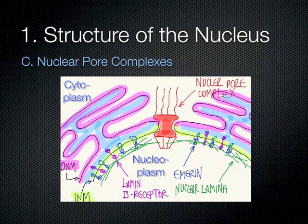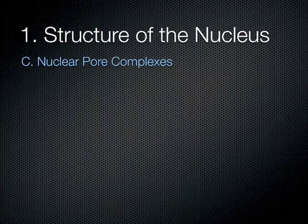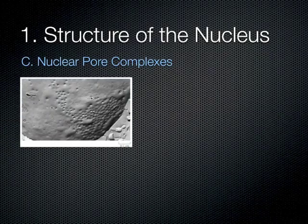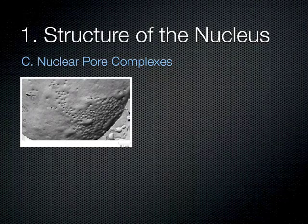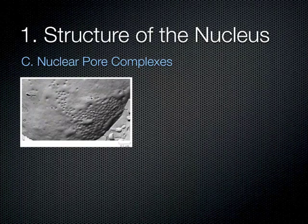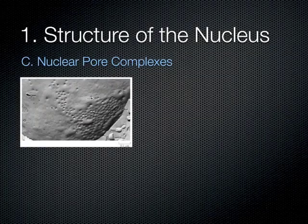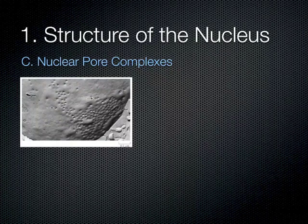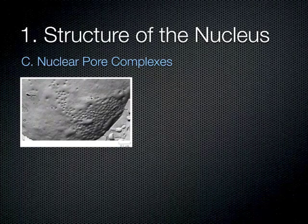The next component is the nuclear pore complex, which is basically the gate communicating the cytoplasm with the nucleoplasm. Any molecule going from the nucleoplasm to the cytoplasm must go through that gate. This is how nuclear pore complexes look on the envelope of the nucleus — this is a cryofracture image captured by electron microscopy of the nuclear envelope.